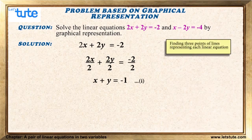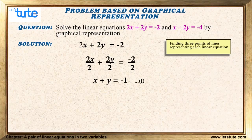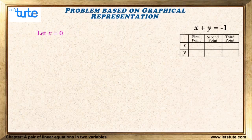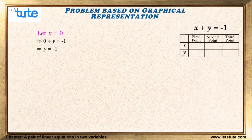Let us take this equation x plus y equals minus 1 and find three points for plotting the line. We assume different values for one coordinate and find the corresponding values of the other variable. First, let x equal 0: substituting, we get 0 plus y equals minus 1, so y equals minus 1. First point: (0, -1).